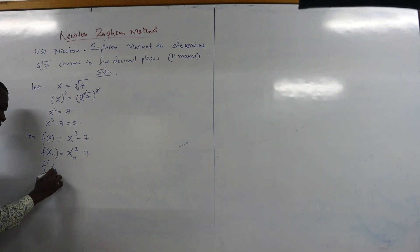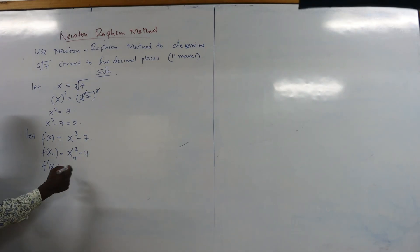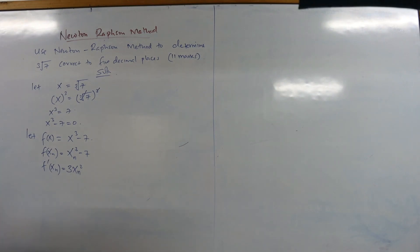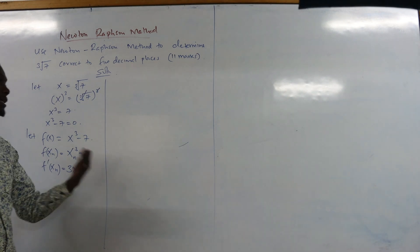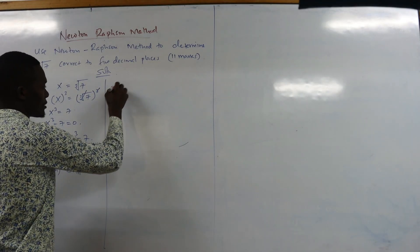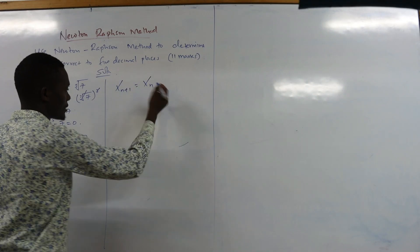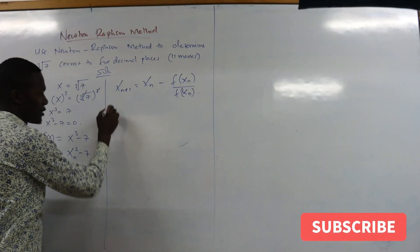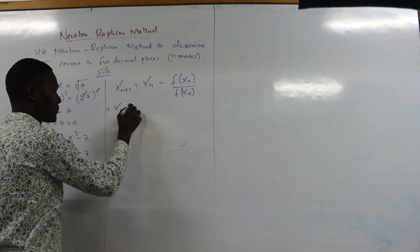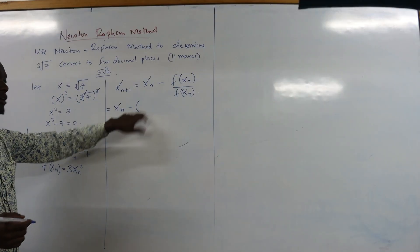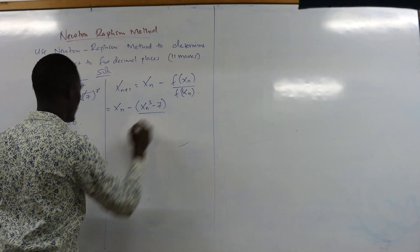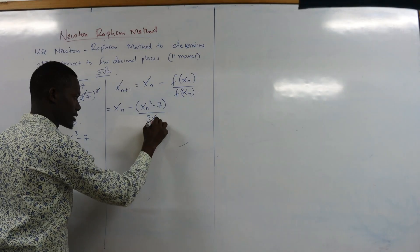Now we find the first derivative f'(x_n). Dropping the power and reducing by 1 gives f'(x_n) = 3x_n². We want to find the better approximation x_(n+1), so substituting into the Newton-Raphson formula gives: x_(n+1) = x_n − (x_n³ − 7) / (3x_n²). Remember to always place your x_n values in brackets.